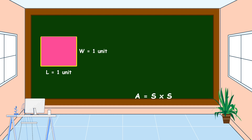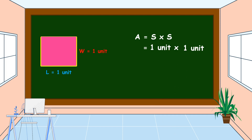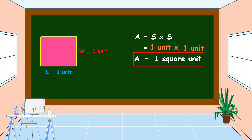Area is the number of square units in a region. Since a square has the same length and width, area is equal to side times side. So the length is one unit and the width is also one unit. One unit times one unit is equal to one square unit. Therefore, the area of this square is one square unit.